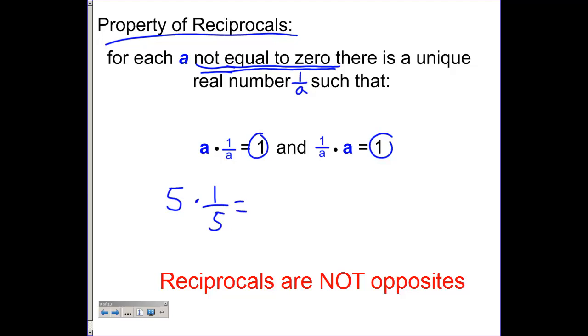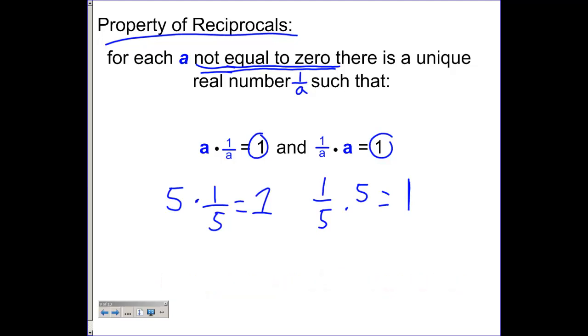Or 1 over 5 times positive 5, I will still get a positive 1. So right here we have property of reciprocals and demonstrating the commutative property at the same time.